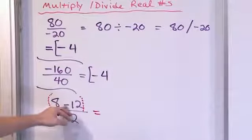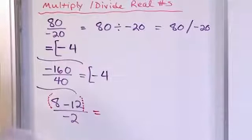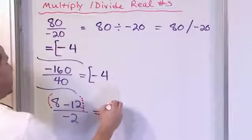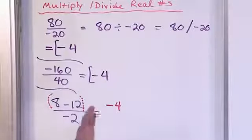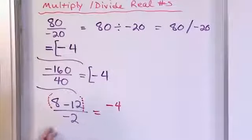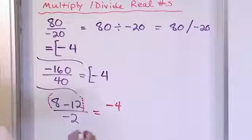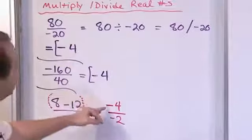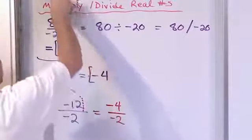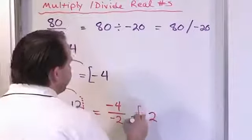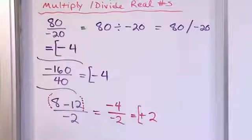Let's do the top first: 8 minus 12. From the previous section, you should know that's going to be negative 4. If you think about it on the number line, you start at 8, go 12 units backwards, hit 0, and then go 4 more units into the negative area — so negative 4 on top. On the bottom it's still negative 2. Negative divided by negative — the signs are the same — so we have a positive answer. 4 divided by 2 is 2, so the answer is positive 2.